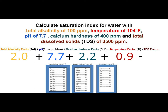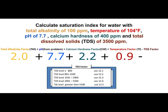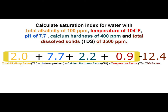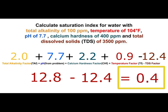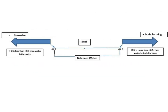Minus the TDS factor. Our TDS is 3,500 ppm — go to the TDS factor box, which has been updated. Find the range 2,901 to 5,500 and use 12.4. Now add everything up: 2.0 plus 7.7 plus 2.2 plus 0.9 equals 12.8. Subtract 12.4, and you get an answer of positive 0.4. On our scale, that is ideal balanced water.